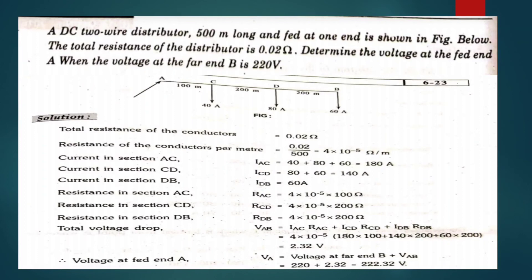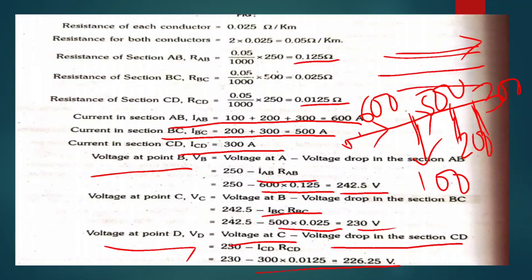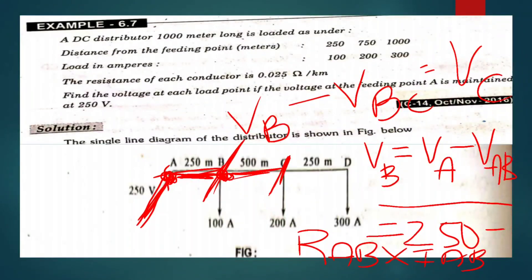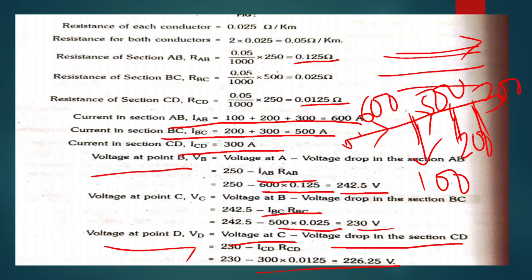So we find the voltage at each load point — load points are B, C, and D. This completes the procedure for the first problem.